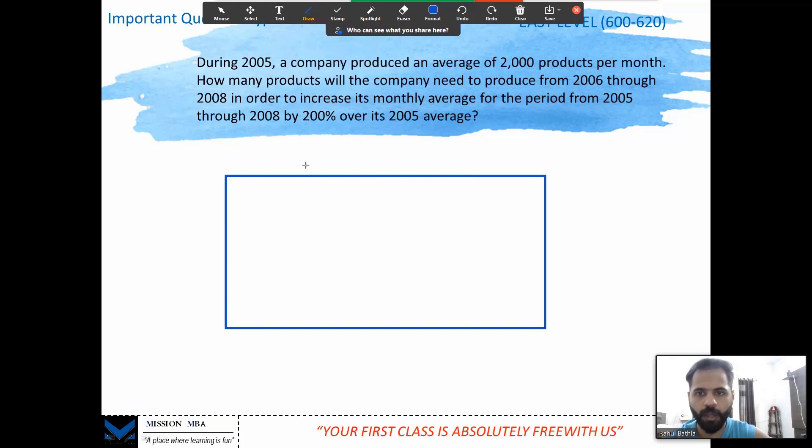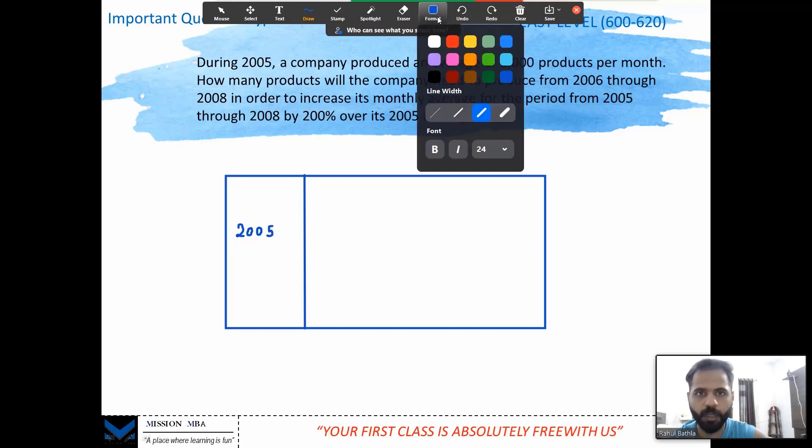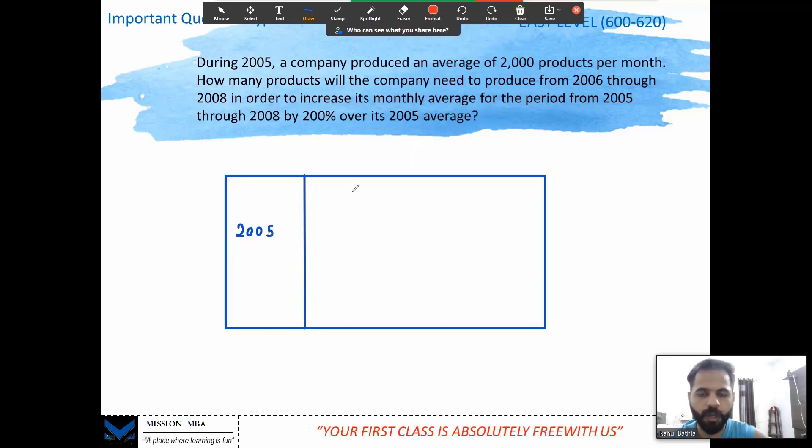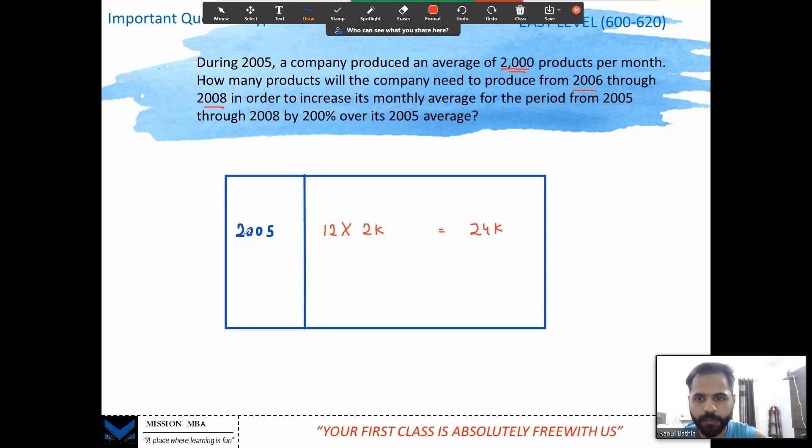Alright, so as decided, let's draw the table. We have some products and we have four years, but they have been divided. We have been given that first in 2005, some products were produced. In 2005, how many months? 12 months. Why am I taking 12 months? Because I am given the average: 2000 products per month. So how many in one year? 12 multiplied by 2000.